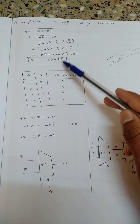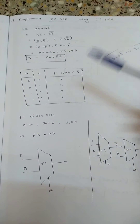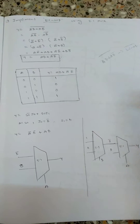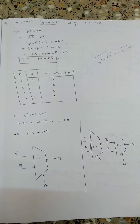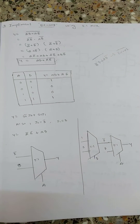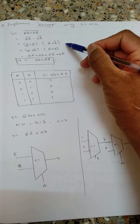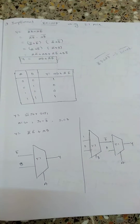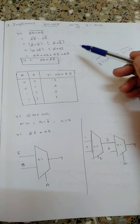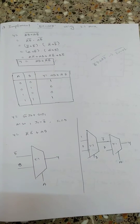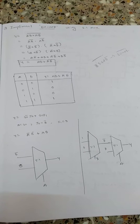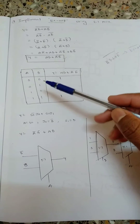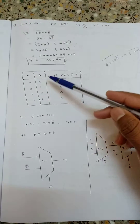Finally I am left with AB + A_bar·B_bar. This is the output equation for the XNOR gate. If you already know this equation you can use it directly; I explained the derivation just for understanding.